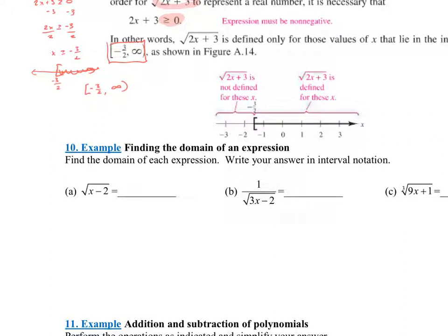When finding domains of functions, think about simple rules. For square roots, you can only take the square root of zero and positive numbers. For fractions, you can never divide by zero. There are also other functions to remember — for instance, logarithms: the natural log of x or log base anything of x is only defined from zero to infinity. Right now we're concentrating on simple algebraic expressions.